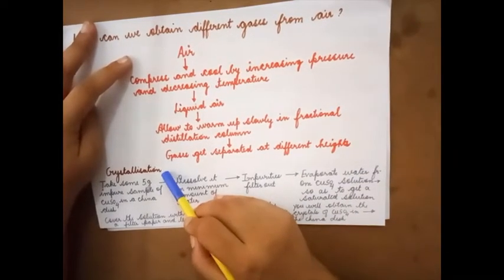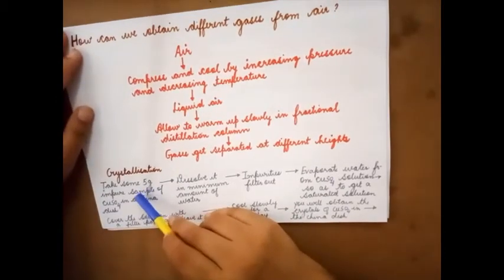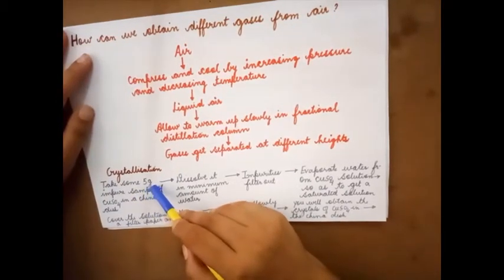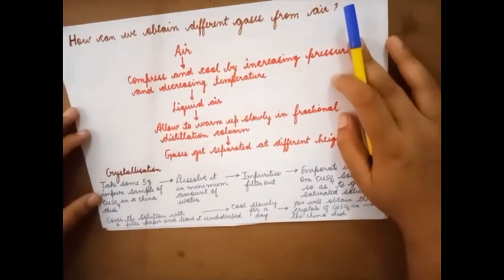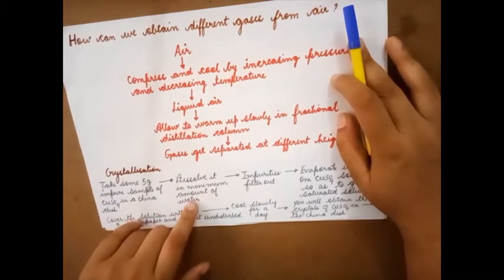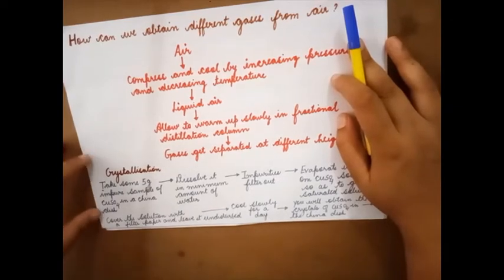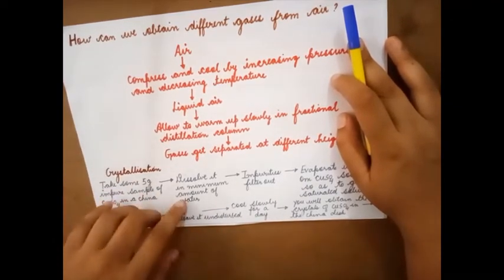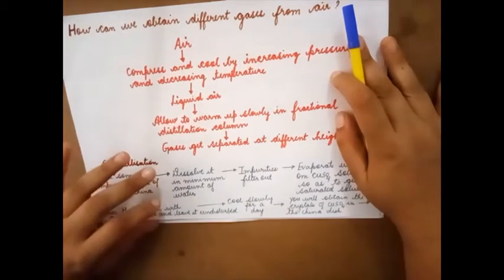Next moving on to crystallization. In crystallization we see that 5 gram of impure sample of copper sulfate is taken in a china dish. Then we will try to dissolve it in minimum amount of water. Minimum means less amount of water.